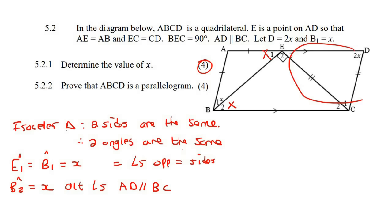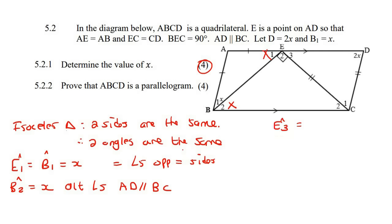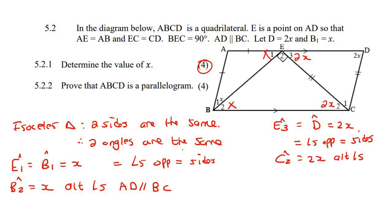Now we're going to do the exact same process on this triangle because this triangle is also isosceles. So we know that angle E3 is the same as angle D, and they both equal 2X — because of equal angles opposite equal sides. We can then use alternating angles to show that C2 is 2X, because AD is parallel to BC.